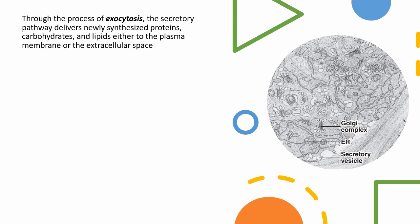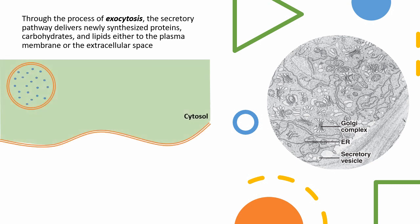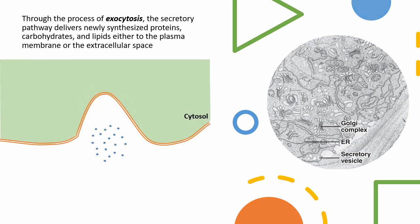Through the process of exocytosis, the secretory pathways deliver newly synthesized proteins, carbohydrates and lipids either to the plasma membrane or to the extracellular space.